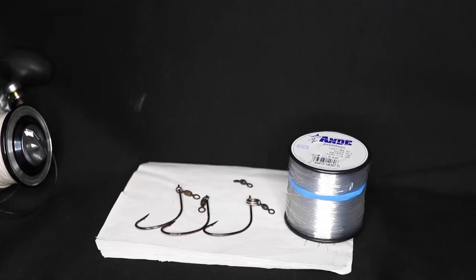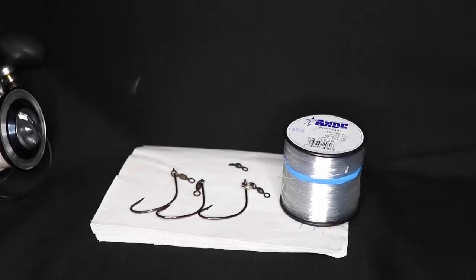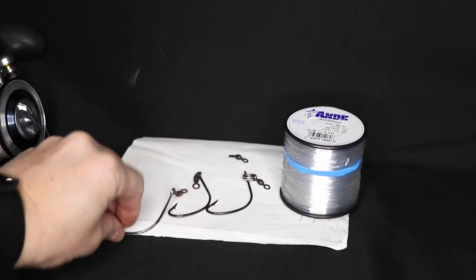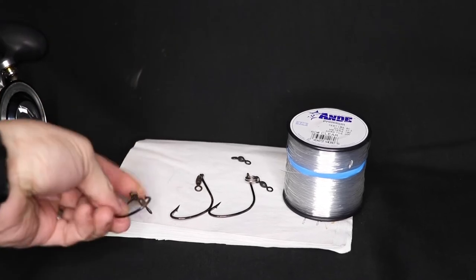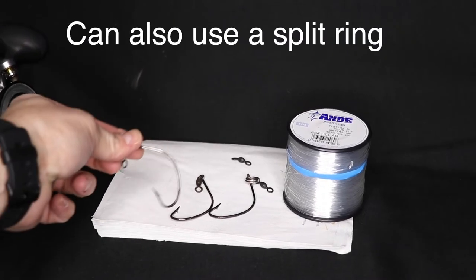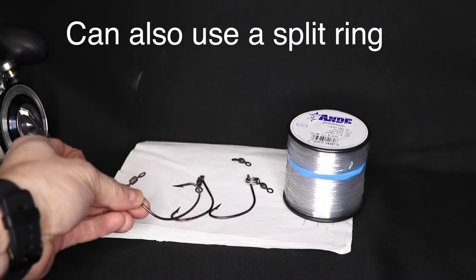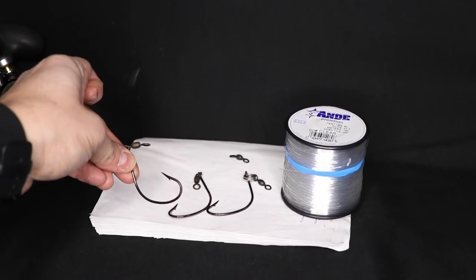You're going to need a few materials to follow along. You're going to want some leader material, 50 to 60 pound test. You're going to want some barrel swivels, and you're going to want a good quality hook. I strongly suggest using this kale style hook. We found that really helps with the hookup ratio on the haddock. All right, let's get into this and show you how to tie these.